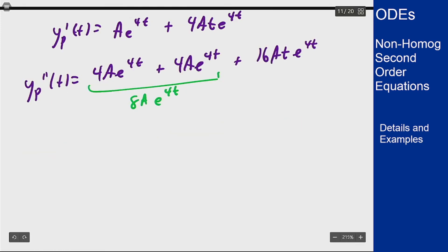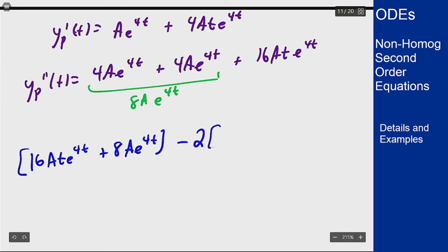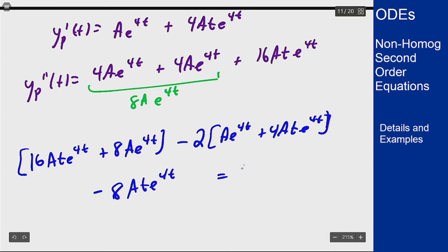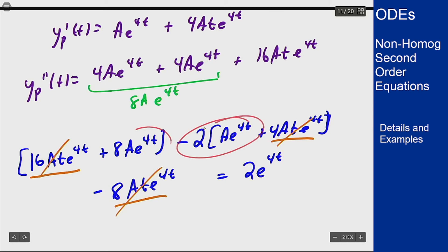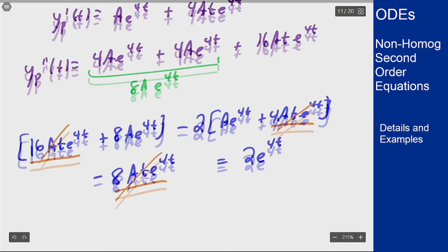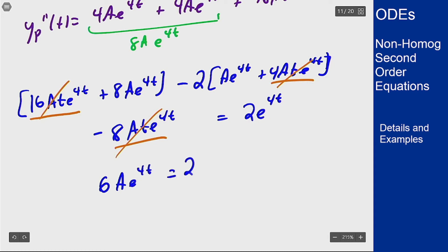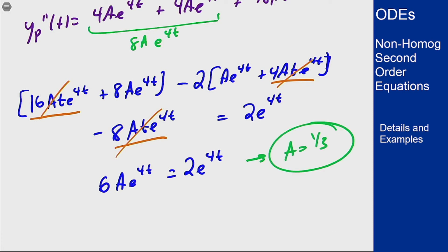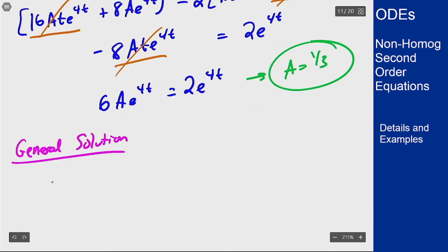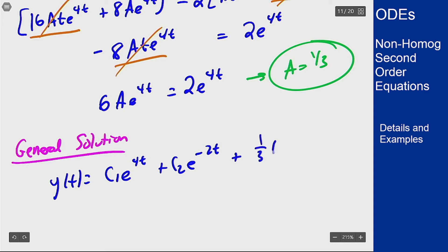Substituting into the equation — second derivative minus twice the first derivative minus 8 times the function equals 2e^(4t) — the t e^(4t) terms all cancel and we're left with 6a e^(4t) = 2e^(4t), so a = 1/3. The full general solution is y(t) = c1 e^(4t) + c2 e^(-2t) + (1/3) t e^(4t).